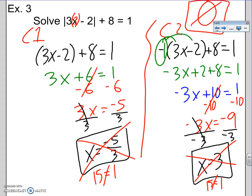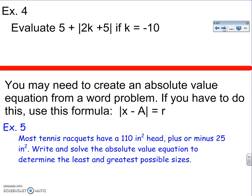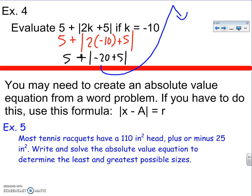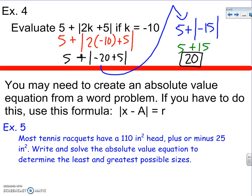When we're solving for a letter, sometimes they ask you to evaluate something when you know the letter. That does not mean 2 cases, that means just plug it in. So here I plug in k. 2 times negative 10 plus 5. It's like PEMDAS. Absolute value times is basically parentheses, so fix the inside. 5 plus negative 20 plus 5. Negative 20 plus 5 is negative 15. The absolute value of negative 15 is positive 15, so 5 plus 15. Add those two together you get 20.